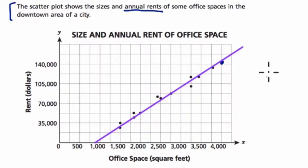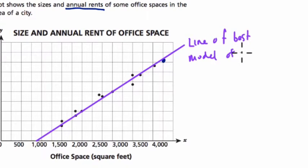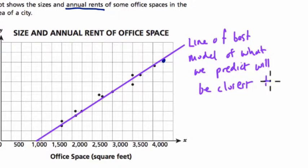the line of best fit never tells you exactly what's happening. This line of best fit is a model of what we predict will be closest to what will happen. That's just a long way of saying the line of best fit is simply an estimate of what we think will happen. It's a model.